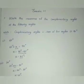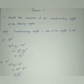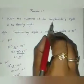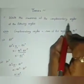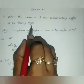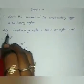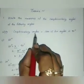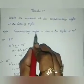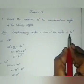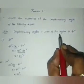Now we will move on to Exercise 1.1: write the measures of the complementary angles of the following angles. One important point to note here is that for complementary angles, the sum of the two angles should be 90 degrees.